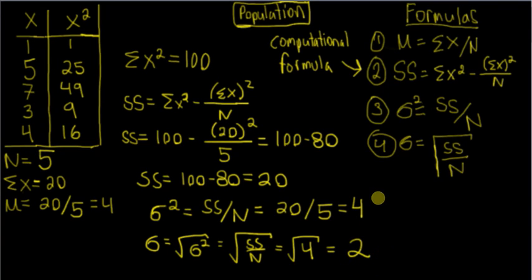And if you look at my other video where I used the definitional formula for the sum of squares, you'll see we came up with the same value for the standard deviation, the same value for the population variance, and the same value for the sum of squares. So both methods are appropriate. I find using the computational formula to be much quicker. You'll see we had less steps.